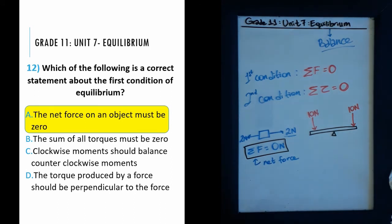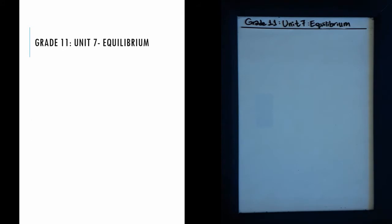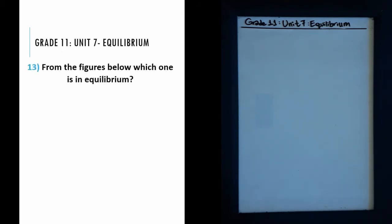You see how all of the choices are true, but not all are appropriate for this question. The answer is choice A — the net force of an object must be zero. Now we're moving on to question 13: from the figures below, which one is in equilibrium?